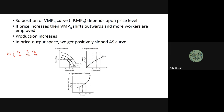Given the production function in Panel B, N0 means we produce Y0, N1 gives Y1, and N2 gives Y2. So now we can link up prices and income. If prices are going up, output is also increasing, so we get a positively sloped curve. We take the Y from here and the prices to get the aggregate supply function.